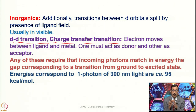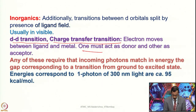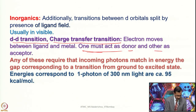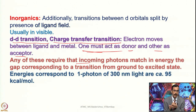There are two types of charge transfer transitions: metal-to-ligand charge transfer (MLCT) transitions and ligand-to-metal charge transfer (LMCT) transitions. In bimetallic systems, metal-to-metal charge transfer transitions also occur. One can also anticipate ligand-to-ligand transitions as well. In all cases of charge transfer transitions, one species must act as a donor and the other as an acceptor. Any of these require that incoming photons match in energy the gap corresponding to a transition from ground to excited state.